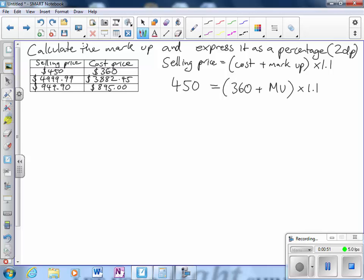So I'm trying to get the markup price by itself. To do that I need to get rid of the 1.1 and the 360. I'm going to start by dividing both sides by 1.1 because the opposite of multiplying by 1.1 is dividing by 1.1.